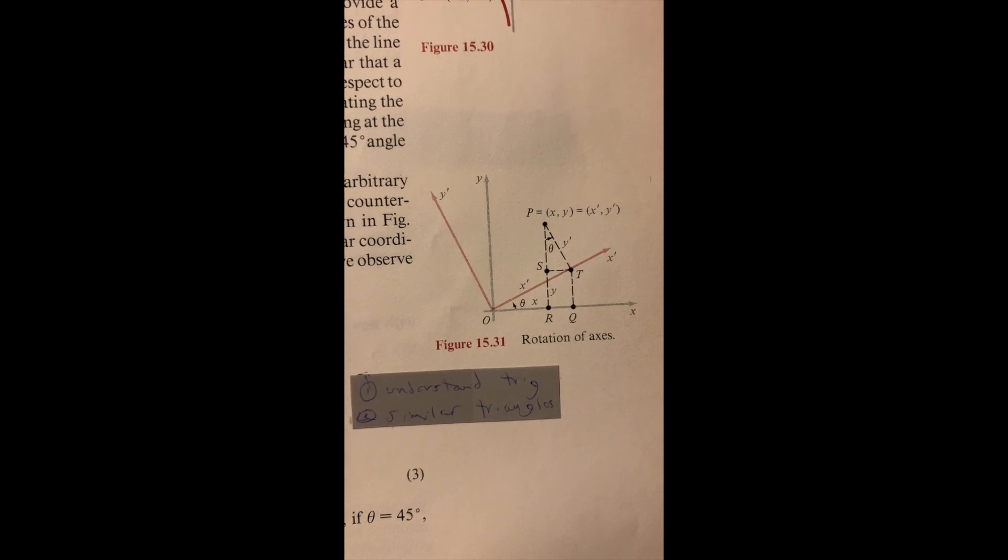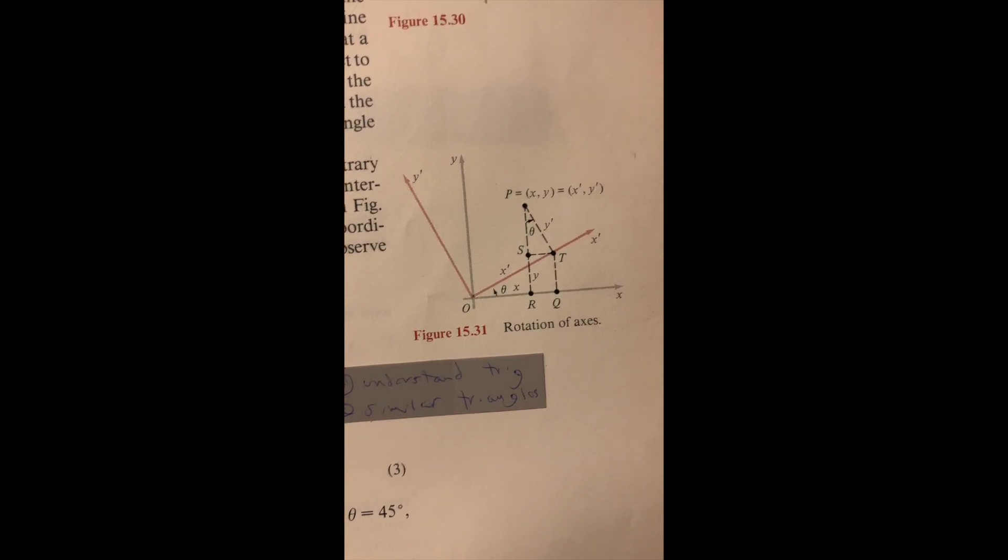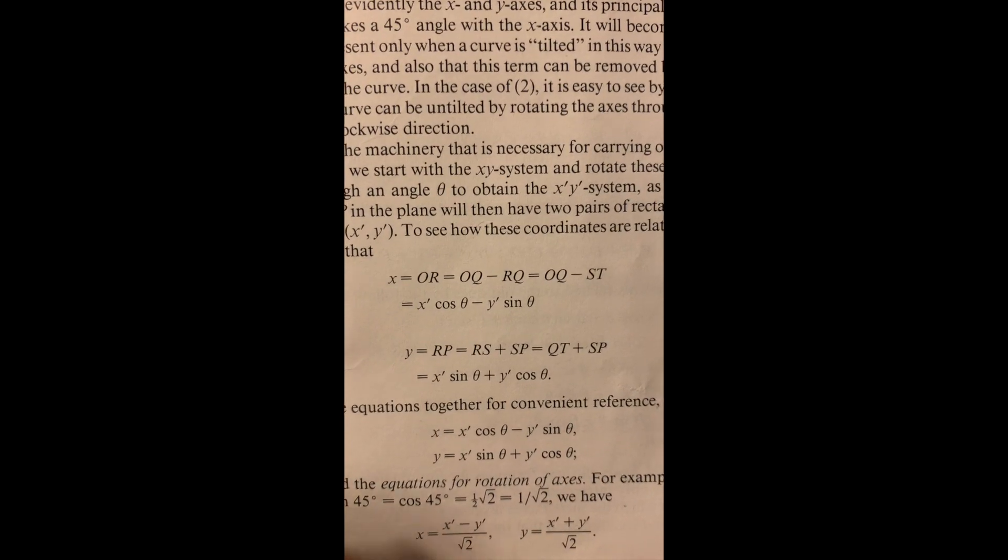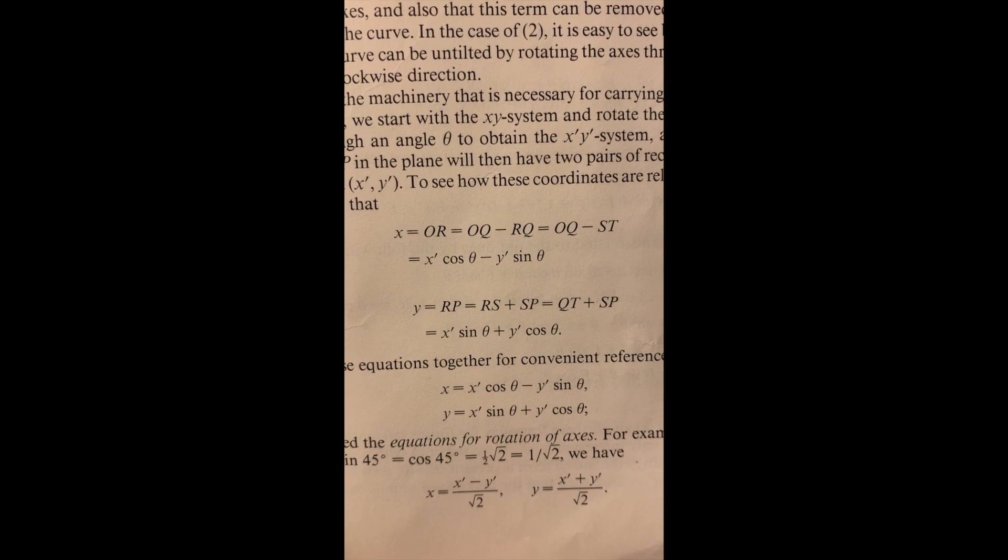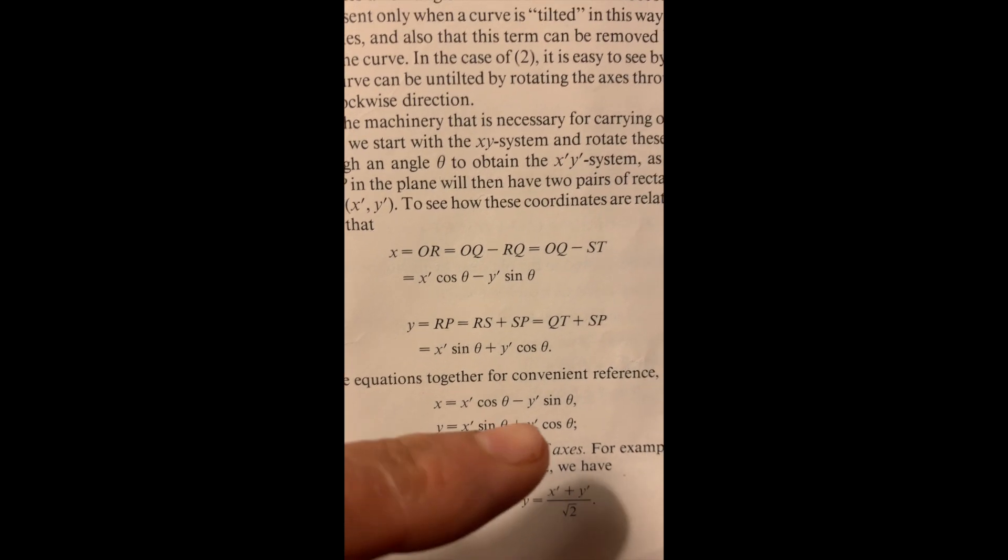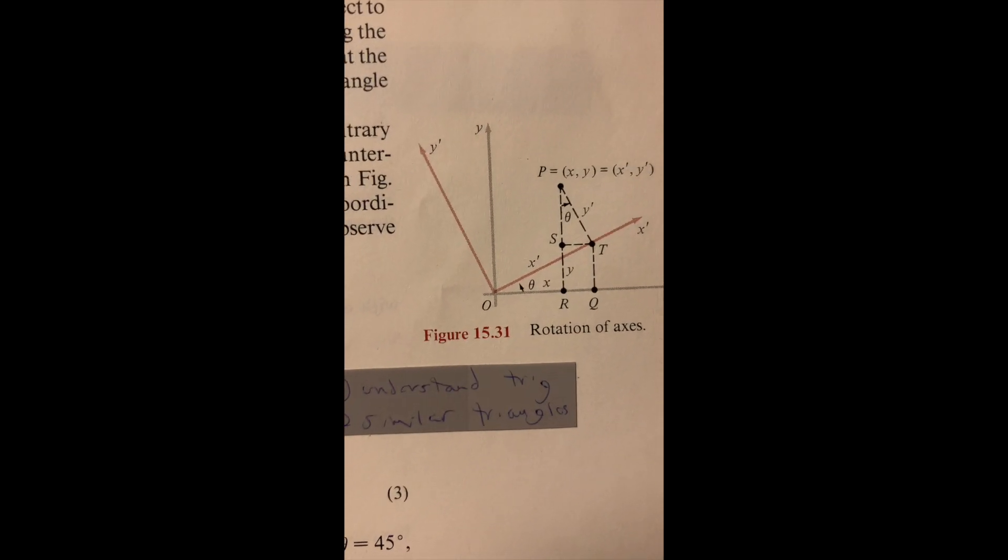This is a particularly interesting thing I realized I knew how to do. It's talking about how to do these conversions, how to rotate these axes using numbers and formulas instead of just pictures. And I had to know what these trigonometry things meant and why they were being used here. So when it said that x equals x prime cosine theta minus y prime sine theta, I had to look at this graph and know what that meant.